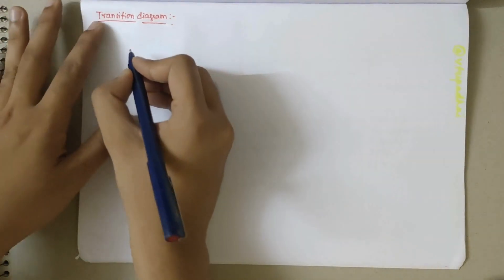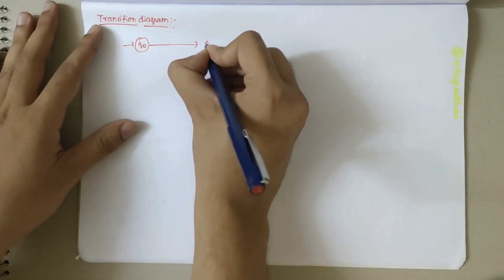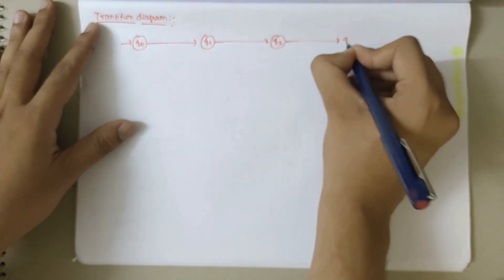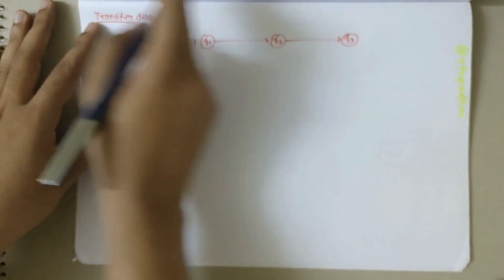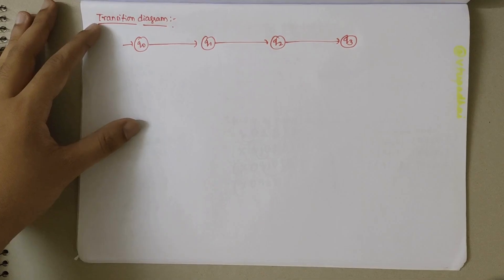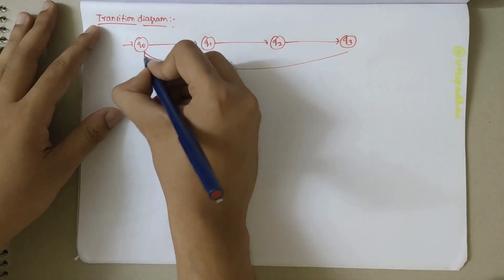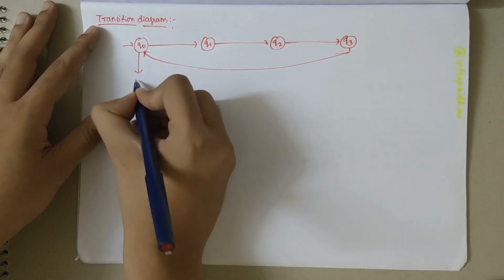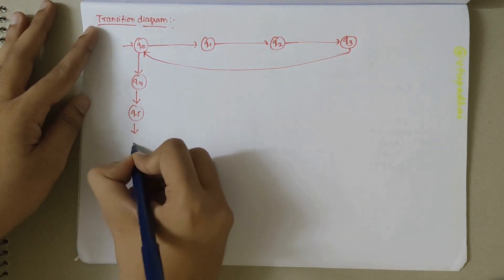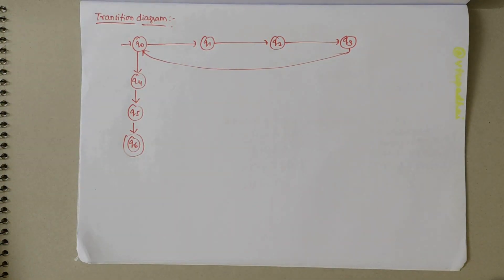Drawing the transition diagram, we have four states initially: Q0 being the start state, then Q1, Q2, and Q3. From Q3, there is a transition back to Q0 as we move left. Additionally, from Q0 we have Q4, Q5, and Q6 states. We reach Q6, the final state, when we come across the blank.